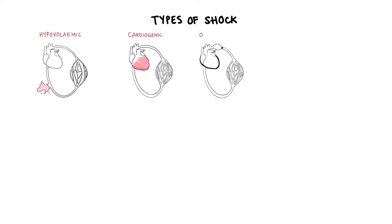There are many types of shock. Shock can be divided into four main types: hypovolemic, cardiogenic shock, obstructive shock, and distributive shock. Distributive shock is further divided into septic shock, anaphylactic shock, and neurogenic shock.